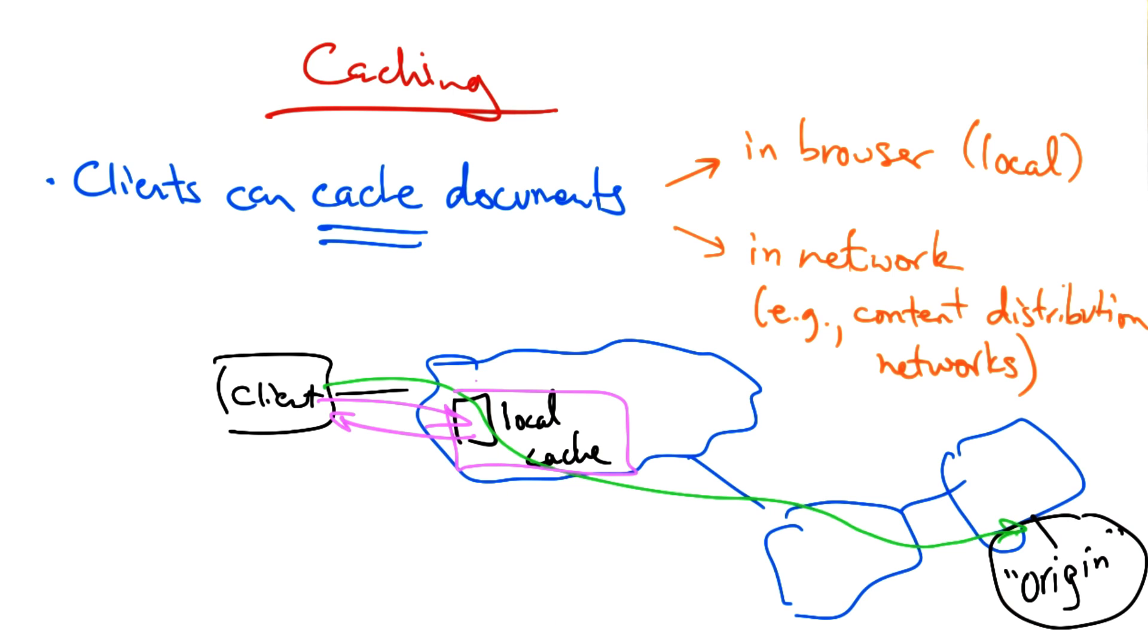If instead, the client could fetch content from the local cache, performance could be drastically improved by fetching content from a more nearby location.